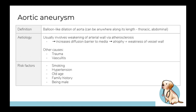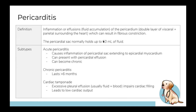Aortic aneurysm is dilation of the aorta, usually due to a weakened vessel wall. Depending on location, symptoms vary: in the abdominal section you may feel a pulsatile abdominal mass with lower back pain; in the thoracic aortic section you may find pressure in the chest and thoracic back pain.